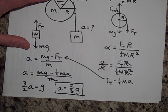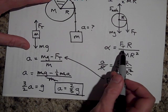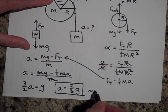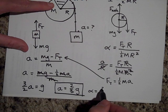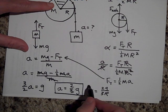And then if I want to find what alpha is I could either put it back into this equation or I could just say alpha equals a over R. So it would be two-thirds g over R. That's alpha.